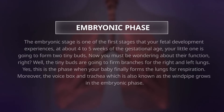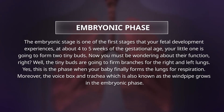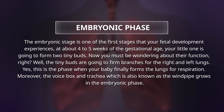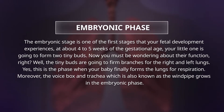The embryonic stage is one of the first stages that your fetus experiences. At about four to five weeks of gestational age, your little one is going to form two tiny buds. The tiny buds are going to form branches for the right and left lungs. This is the phase when your baby finally forms the lungs for respiration. Moreover, the voice box and trachea, which is also known as the windpipe, grows in the embryonic phase.